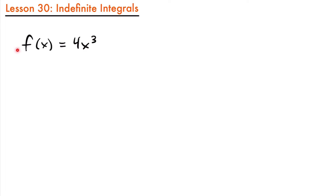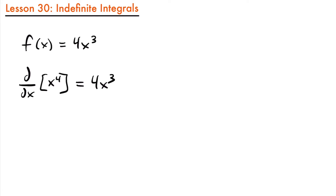Take a look at this function here. We have f(x) equals 4x cubed. Let's say we wanted to find a function whose derivative is this function, 4x cubed. We could think about it and eventually come to the idea that we know the derivative d/dx of x to the fourth power is equal to 4x cubed, because if we use the power rule on x to the fourth power, we'd multiply 4 and subtract 1 from our exponent, giving us 4 times x cubed.